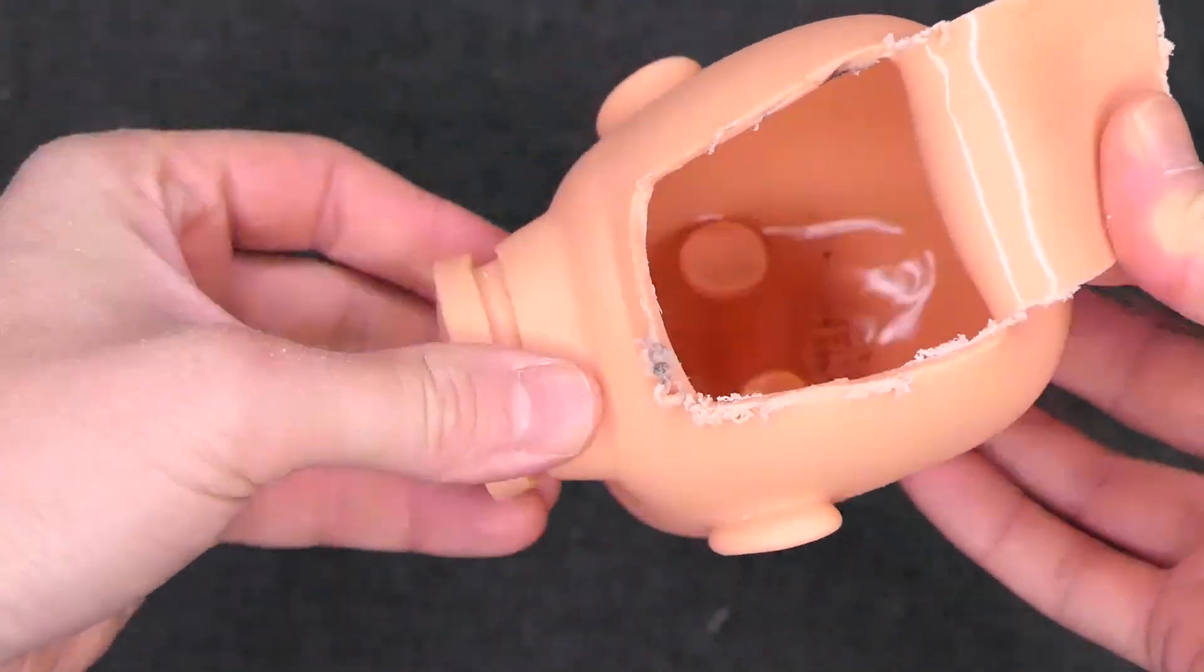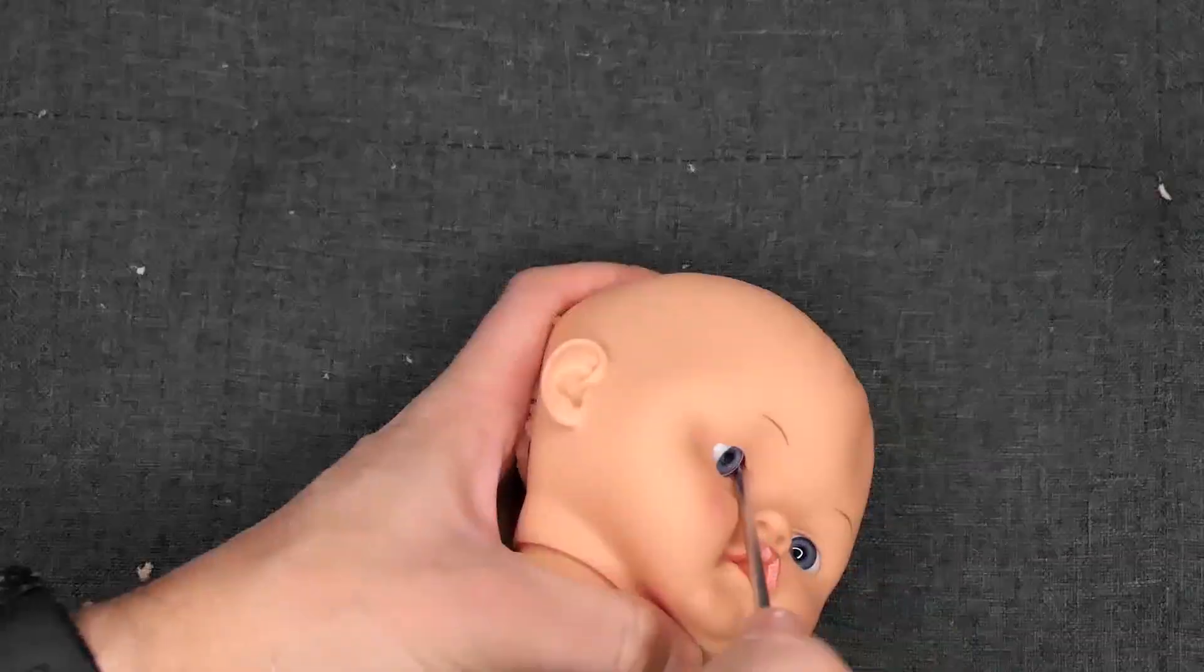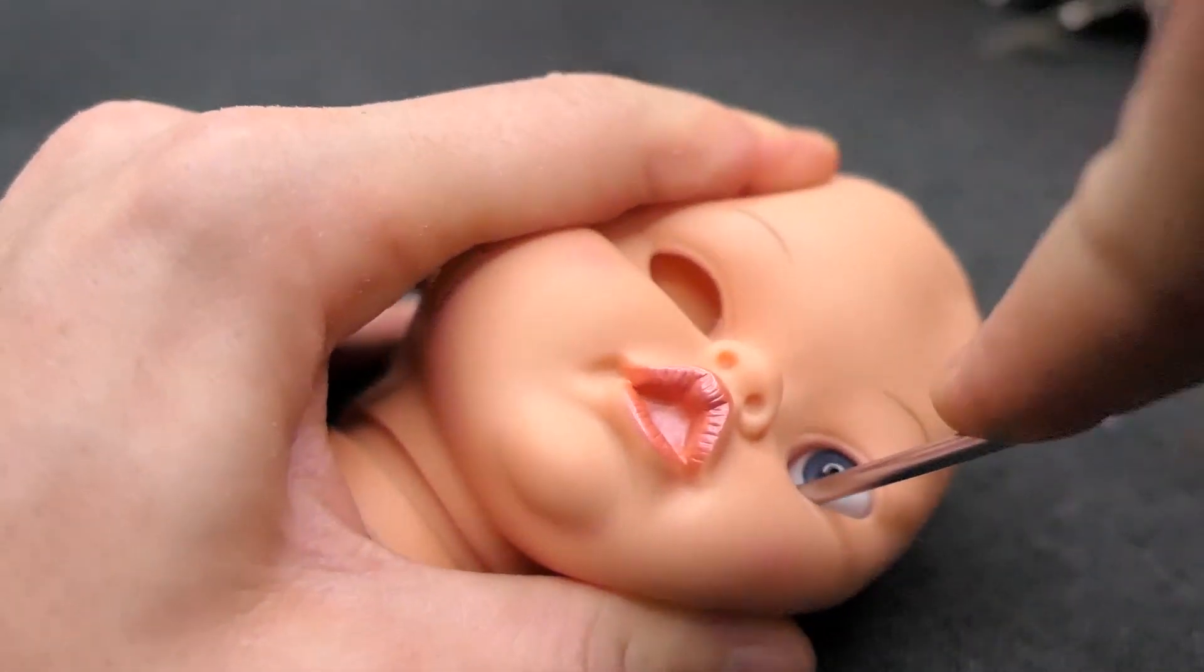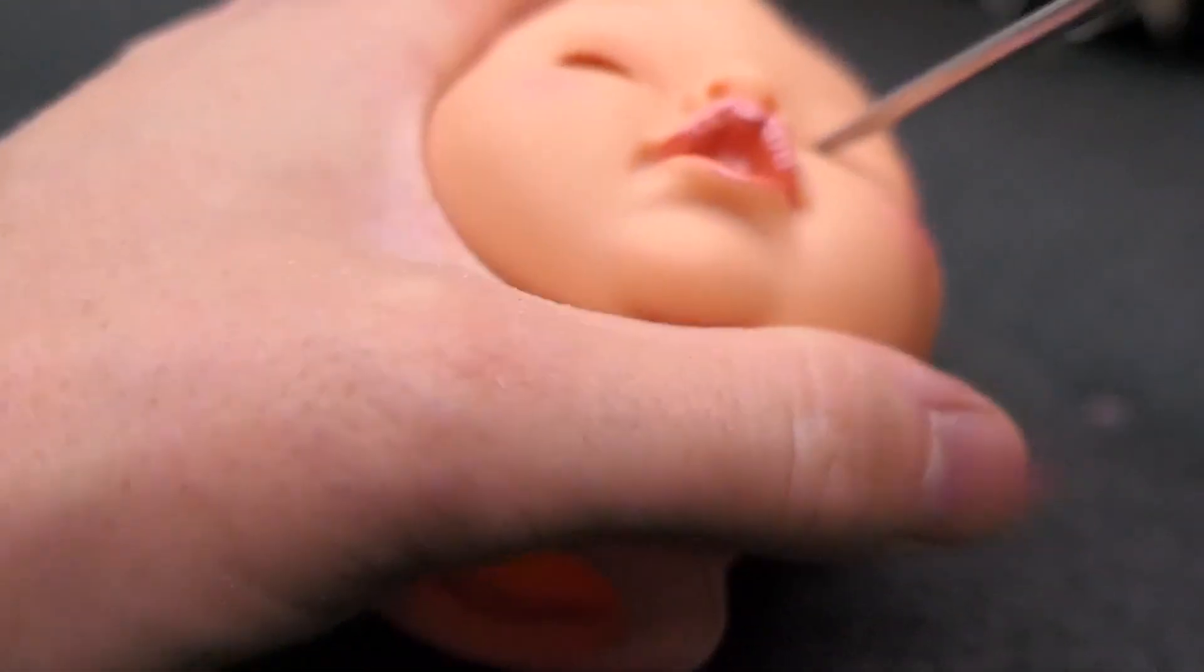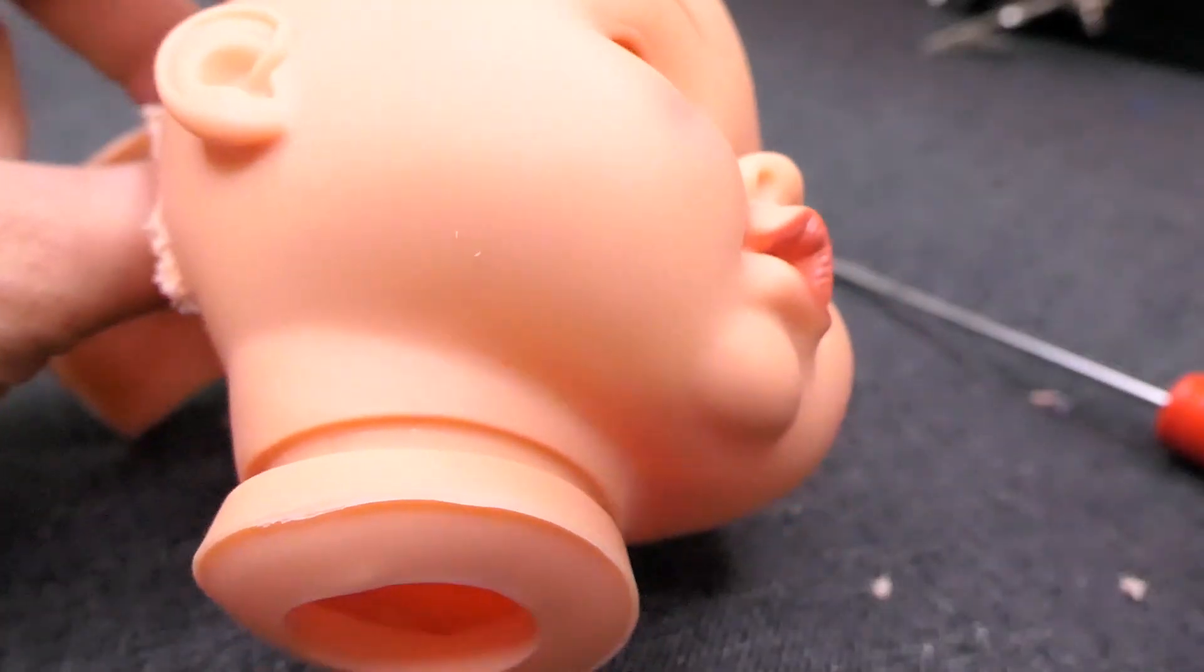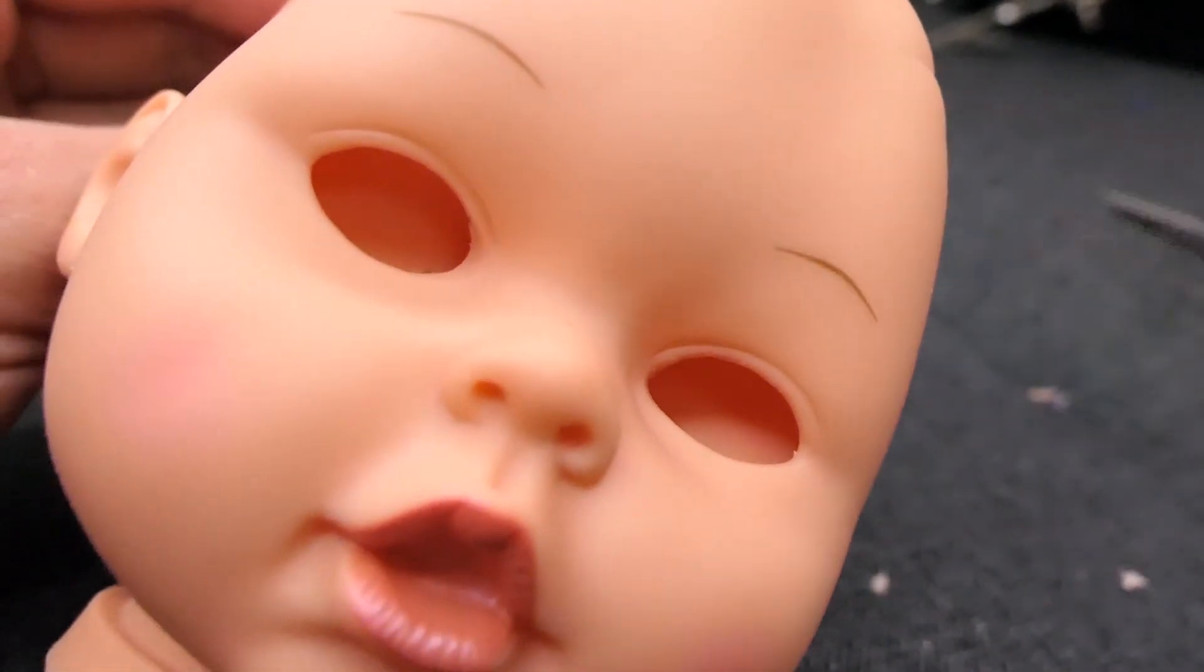Remove the existing eyes using a screwdriver or blunt object. Clear any excess plastic from the inside of the eyes so that the new eyes can move freely in the mechanism.